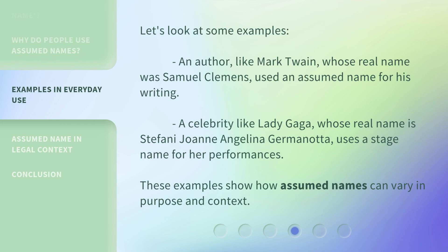Let's look at some examples. An author like Mark Twain, whose real name was Samuel Clemens, used an assumed name for his writing. A celebrity like Lady Gaga, whose real name is Stefani Joanne Angelina Germanotta, uses a stage name for her performances. These examples show how assumed names can vary in purpose and context.